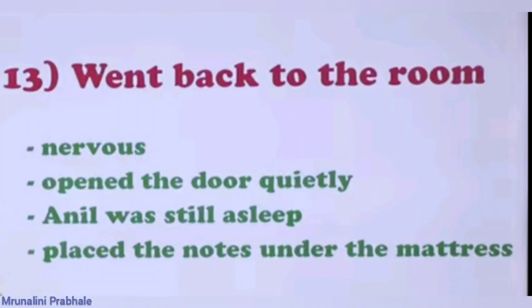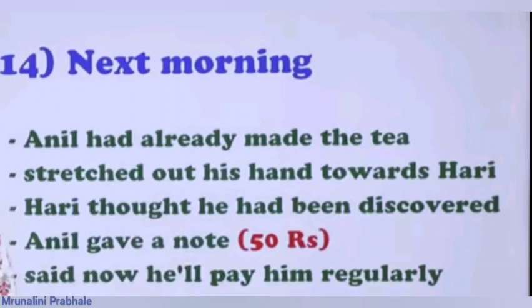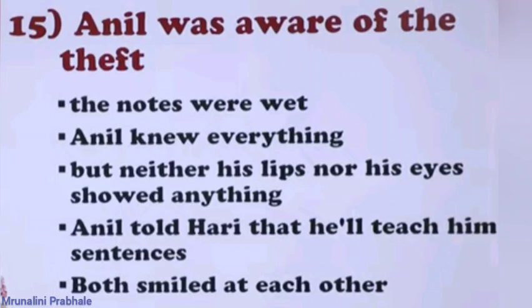The next morning, Anil had already made tea. Anil stretched out his hand towards Hari, and Hari thought he had been discovered — but Anil gave him a 50 rupee note and said he would pay him regularly from now on. Anil knew everything because the notes were still wet, but neither his lips nor his eyes showed anything. He again told Hari he would teach him to write sentences, giving him one more chance. Both smiled at each other and pretended that nothing had happened.